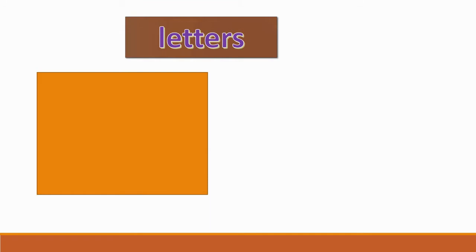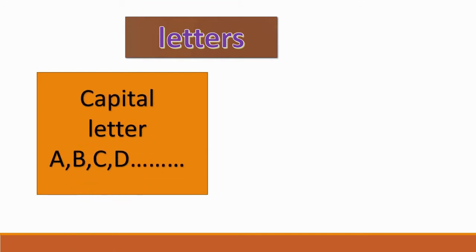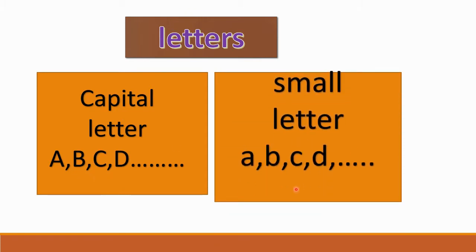In English, letters are mainly divided into two types: capital letters, that is uppercase letters — A, B, C, D — and the same letters A, B, C, D in lowercase. Most of the time we use lowercase letters only, but there are certain places where we must use capital letters.